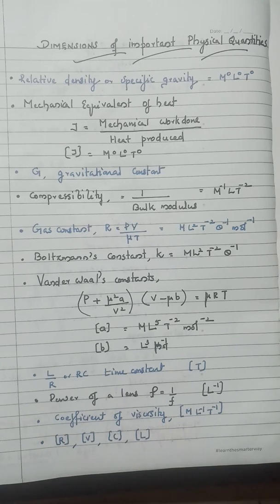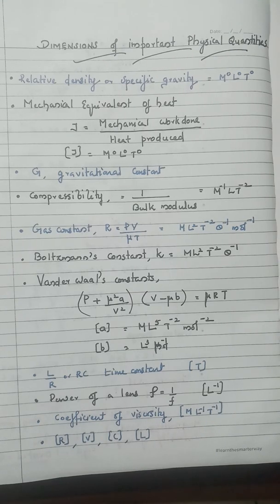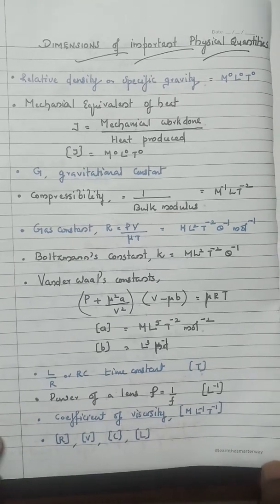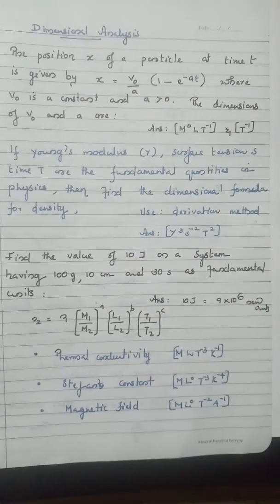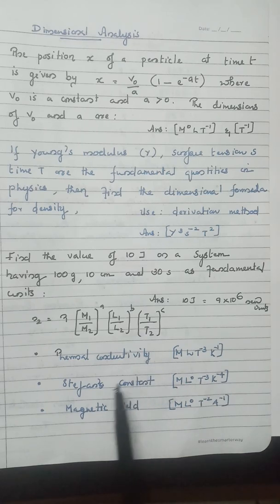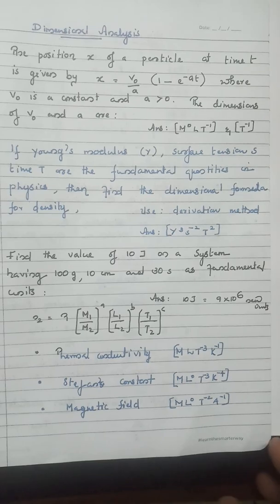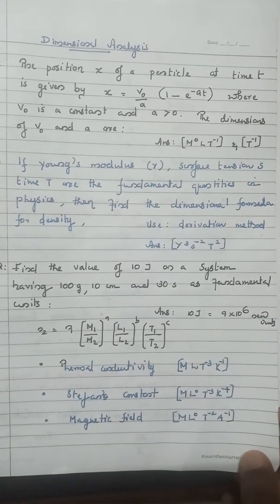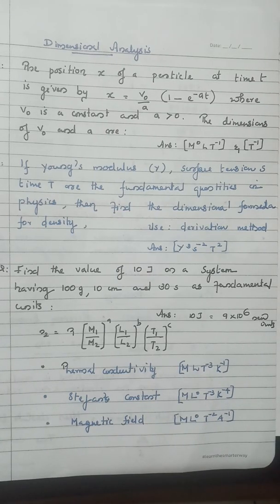Other important dimensional quantities include Boltzmann constant, van der Waals constants, time constants L/R and RC, power of a lens (reciprocal of focal length, dimensions L⁻¹), and coefficient of viscosity with dimensions ML⁻¹T⁻¹. For second-year topics: resistance, potential, capacitance, and inductance. Also keep in mind thermal conductivity, Stefan's constant, and magnetic field. Covering the last four years of NEET examination dimensional analysis questions is essential.